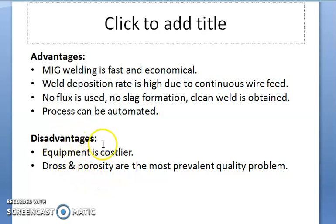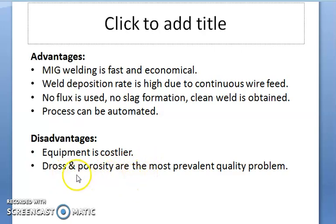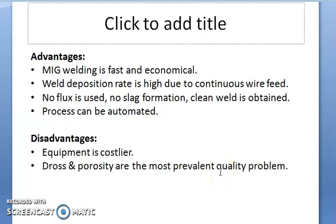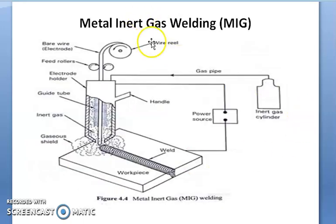The disadvantages are: the equipment is costlier because it is an automated machine. Some welding defects may occur — dross and porosity are the most prevalent quality problems. However, extensive edge preparation can eliminate these defects. I hope all of you understood the metal inert gas welding process. Thank you.